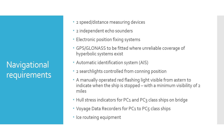Navigation requirements include two speed and distance measuring devices, two independent echo sounders, and electronic position fixing systems. GPS or GLONASS to be fitted where unreliable coverage of hyperbolic systems exists. Automatic Identification Systems, or AIS, should be available. Two searchlights controlled from the conning position on the bridge should be available, as well as a manually operated red flashing light visible from the stern to indicate that the ship is stopped, with a minimum visibility of two miles.